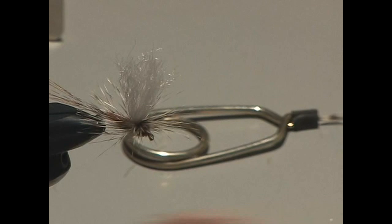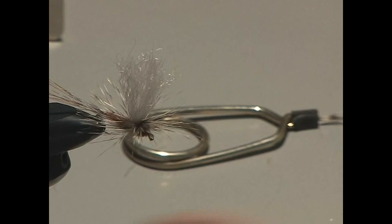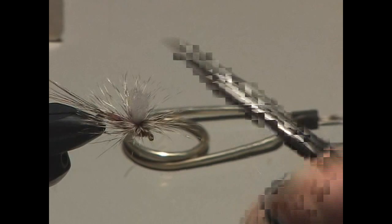Now here's the last thing I do on that fly. This is a spinner. Remember, this is not a mayfly. It's a spinner. I'm going to cut that wing down fairly short. Now I'm going to spread the wing apart.